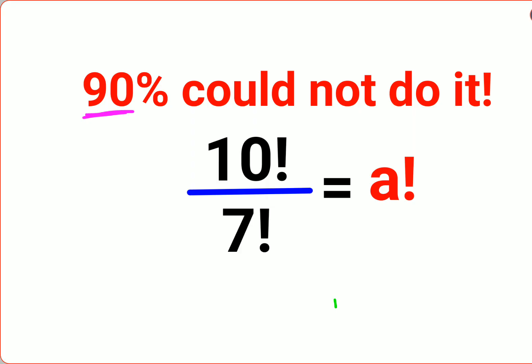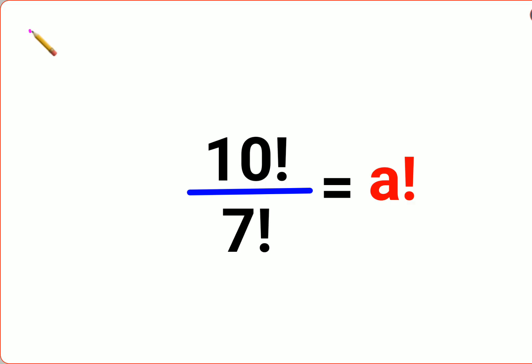First, remember that whenever you have a factorial, which is basically an exclamation mark in front of a number, it can be written in its expanded mathematical form by writing